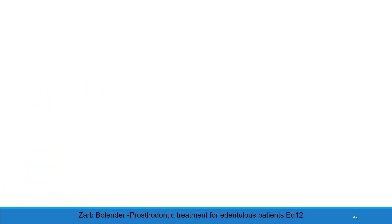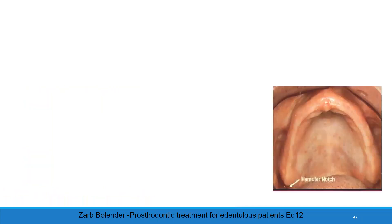Hamular notch. The submucosa here is thick, so additional pressure can be applied. This area is present lateral to the posterior palatal seal (PPS). Clinical consideration: the denture should never extend beyond the hamular notch; otherwise dislodgement occurs on wide opening.